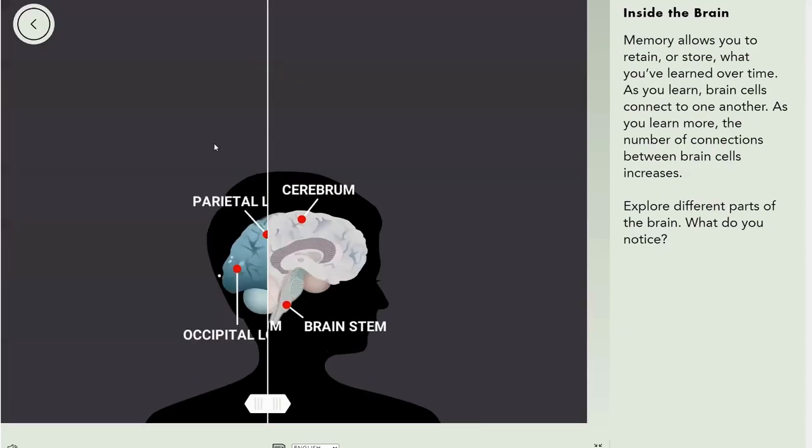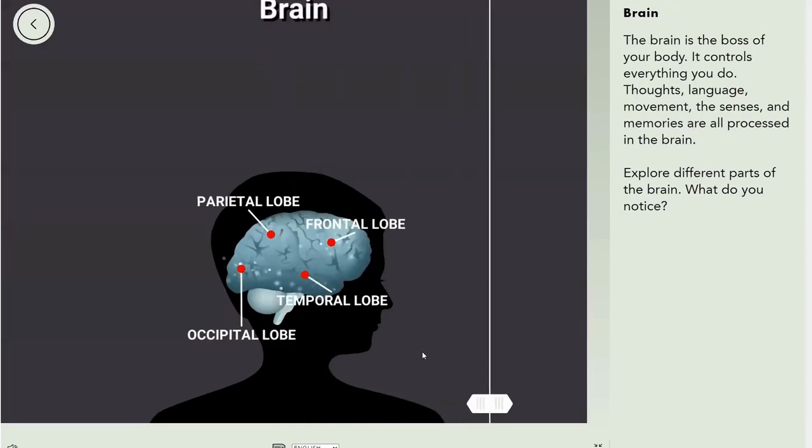Let's test out the brain. The brain is the boss of your body. It controls basically everything you do. Thought, language, movement, senses, and memories are all inside the brain. You could say it's all in the mind. Explore different parts of the brain.